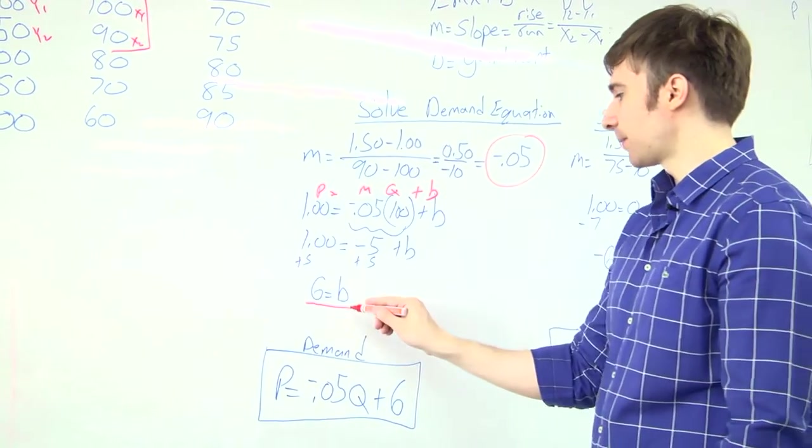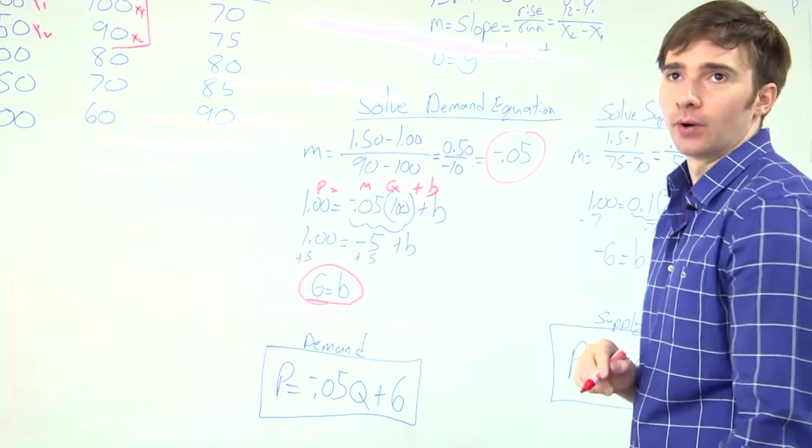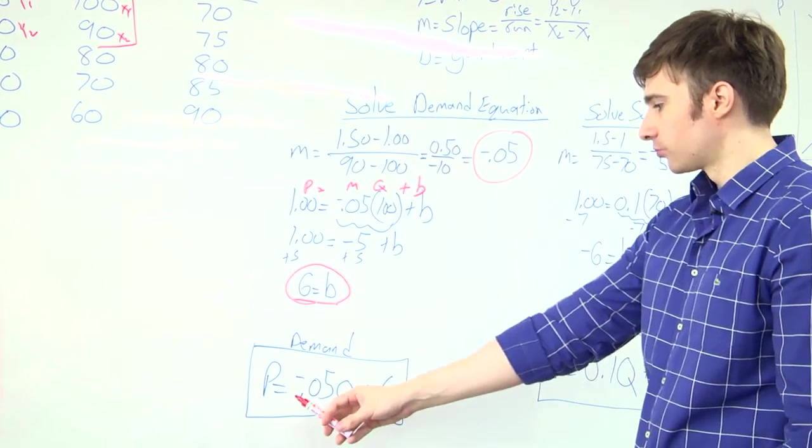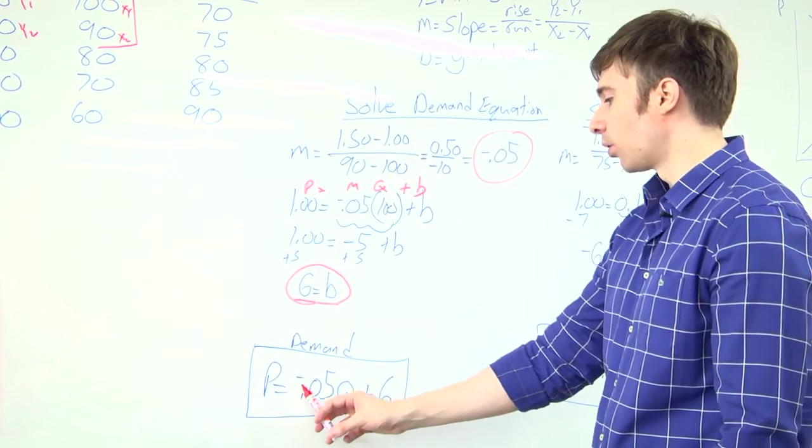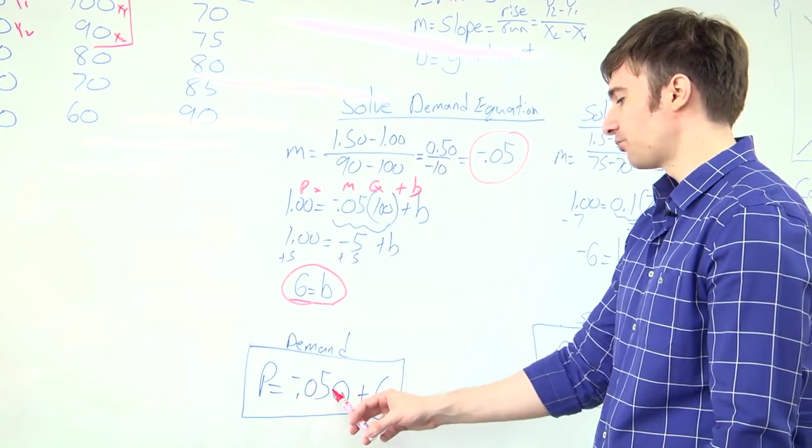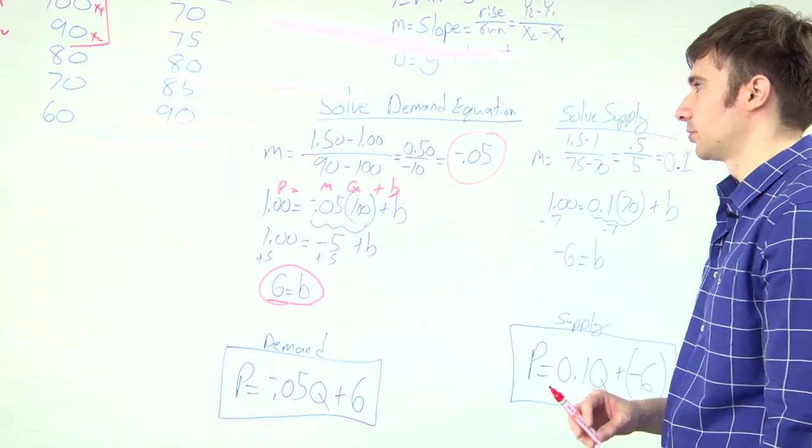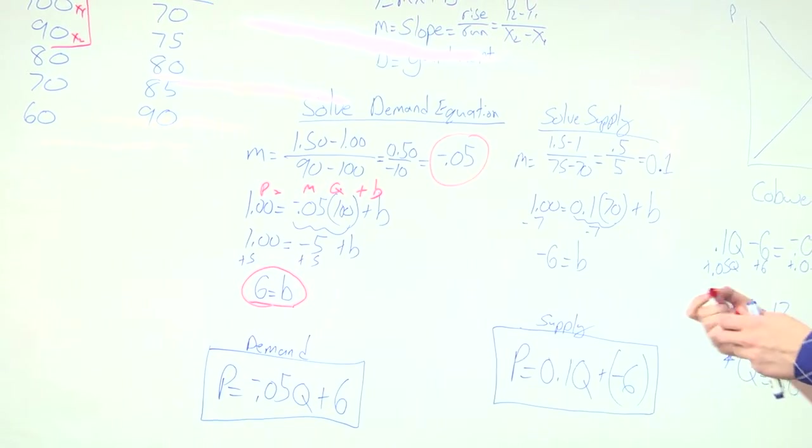Now that I have my m and my b, I have my demand equation. So I'm going to get p equals negative .05q plus 6. We're going to do the exact same thing for supply.